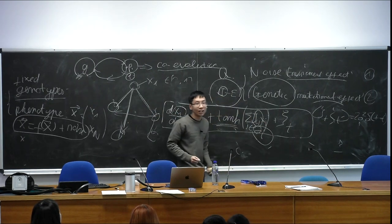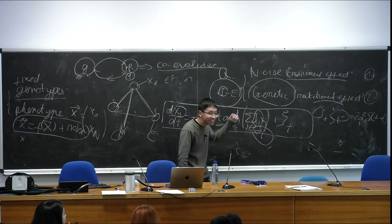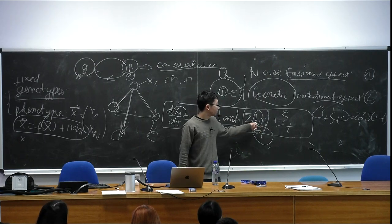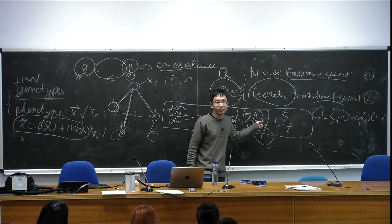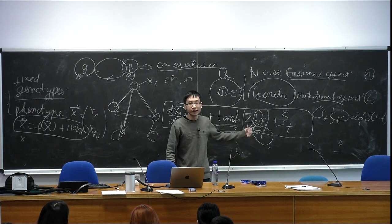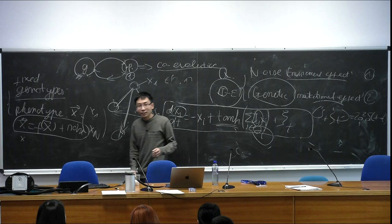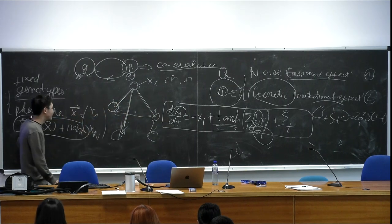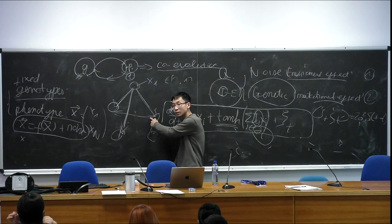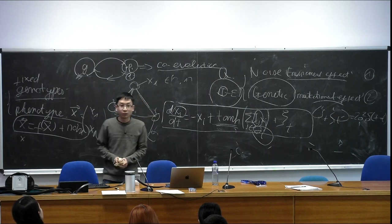In disordered systems — the topic of greatest interest here — people normally consider different ensembles for the coupling matrix J_ij. It can be a Gaussian ensemble: every J_ij is distributed according to a Gaussian distribution with zero mean and some variance. As a starting point, you can simulate the dynamics of this system with the assumption that the network is fixed — the topology is fixed — and the coupling strengths are distributed according to a Gaussian distribution.